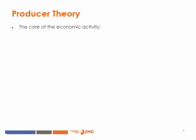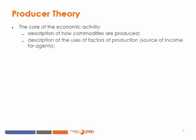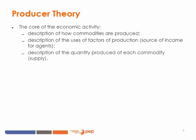The producer theory is very important in CGE modeling. Why? Simply because the productive activity is the core of the economic activity. The producer theory describes how commodities are produced, the use of the factors of production which is the main source of income for agents, and also the quantity produced of each commodity — that is a description of the supply side.